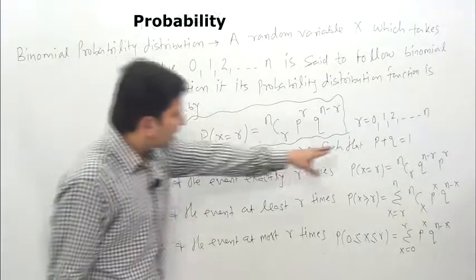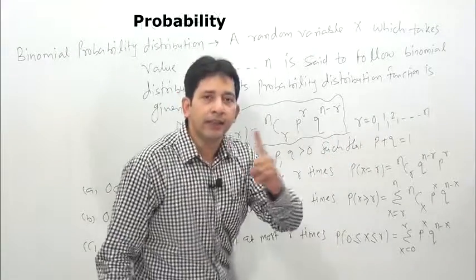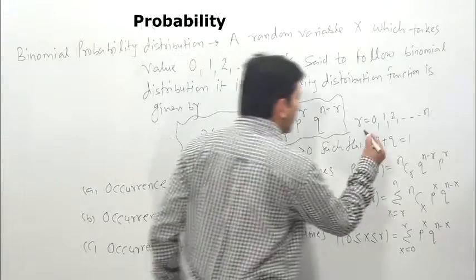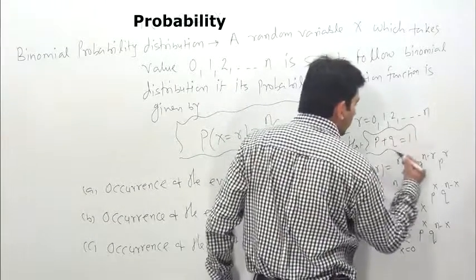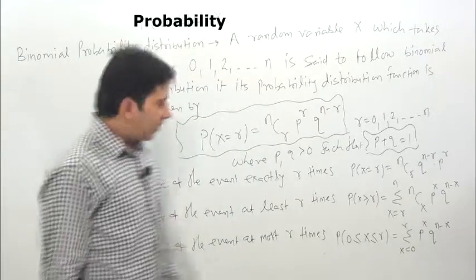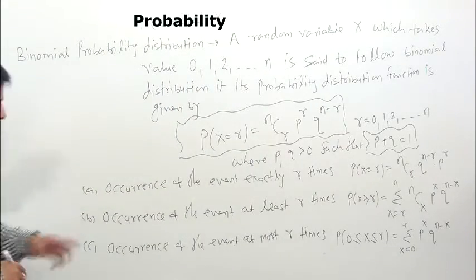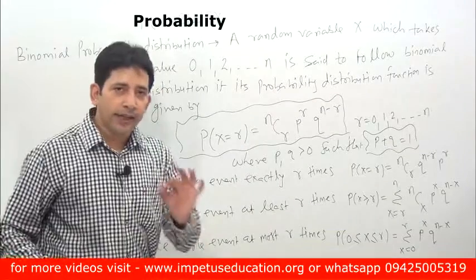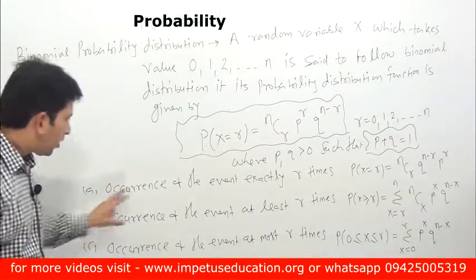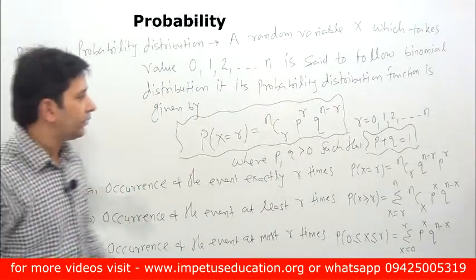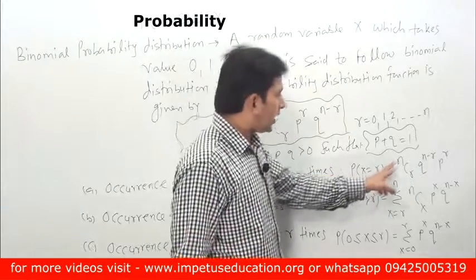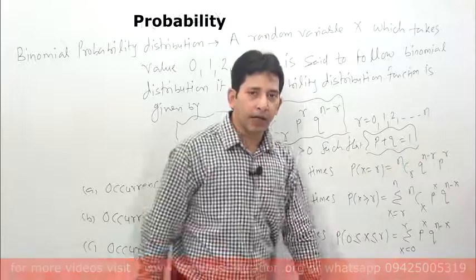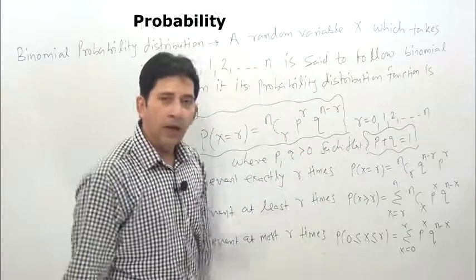Remember that p and q represent probabilities of a single experiment — happening or not happening — which is why p + q = 1. For the case of occurrence of the event exactly r times, the formula is P(x = r) = nCr × q^(n−r) × p^r.